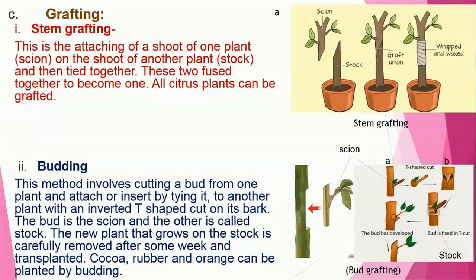The next method is grafting, which is divided into two types: stem grafting and bud grafting. In stem grafting, a shoot of one plant called the scion is attached to the shoot of another plant called the stock. These two plants must be closely related. They are tied together and fuse over time to become one plant. All citrus plants such as lemon, oranges, and tangerine can be grafted by this method. You can see in the image that the scion from plant A is attached to the stock of plant B and tied together, eventually becoming a single plant.